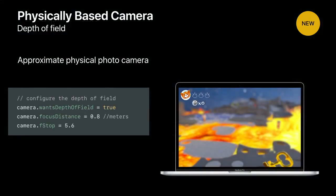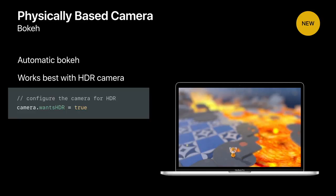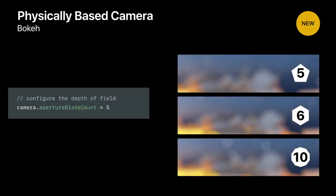SceneKit is modeling a real photo camera depth of field. To activate depth of field, set the wantsDepthOfField property to true and then configure it by setting the focus distance and f-stop properties. SceneKit will approximate real photo camera depth of field and blur the scene in a way that is consistent with these parameters from the photography world. The new depth of field also simulates the bokeh you would get with real photo cameras — bokeh appear on bright objects that are out of focus, and because they are generated by pixels with very high intensity, this feature works best if you render your scene with an HDR camera. Just set the wantsHDR property to true on SCNCamera. The shape of the bokeh depends on the number of blades of the aperture, which you can also configure on SCNCamera.